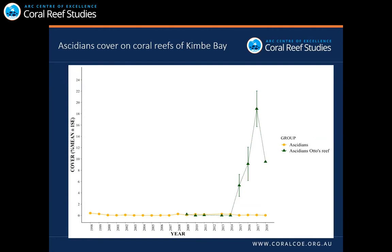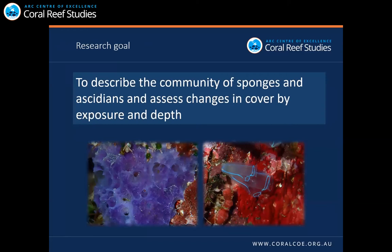We have strong information about ascidian cover in the area I am going to study. In the last 20 years, they have been recording ascidian cover in Kimby Bay, where it is usually less than 1%. However, in 2014, in the reef called Otto's Reef, there was a strong outbreak of ascidians, and they reached a maximum of 20% cover in 2017. It is therefore now important to fill the gaps in knowledge regarding species richness of sponges and ascidians and also their ecology.